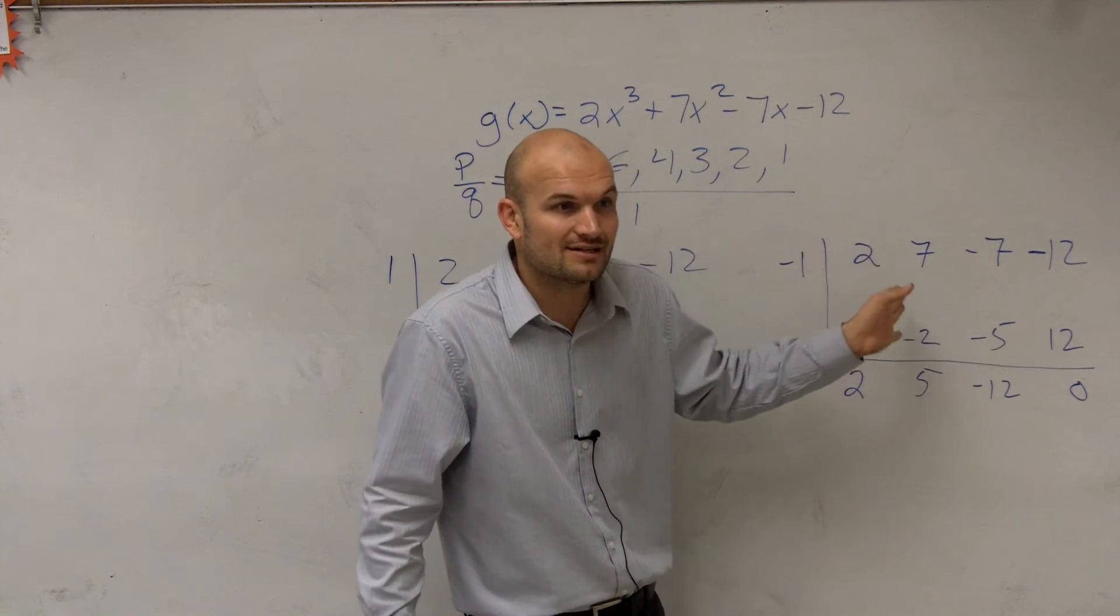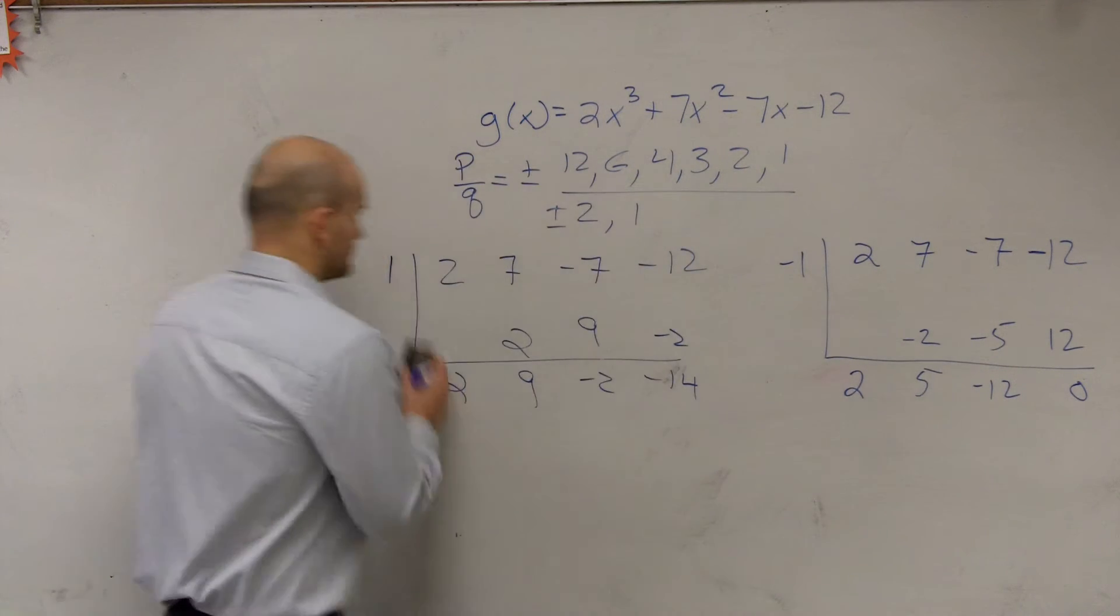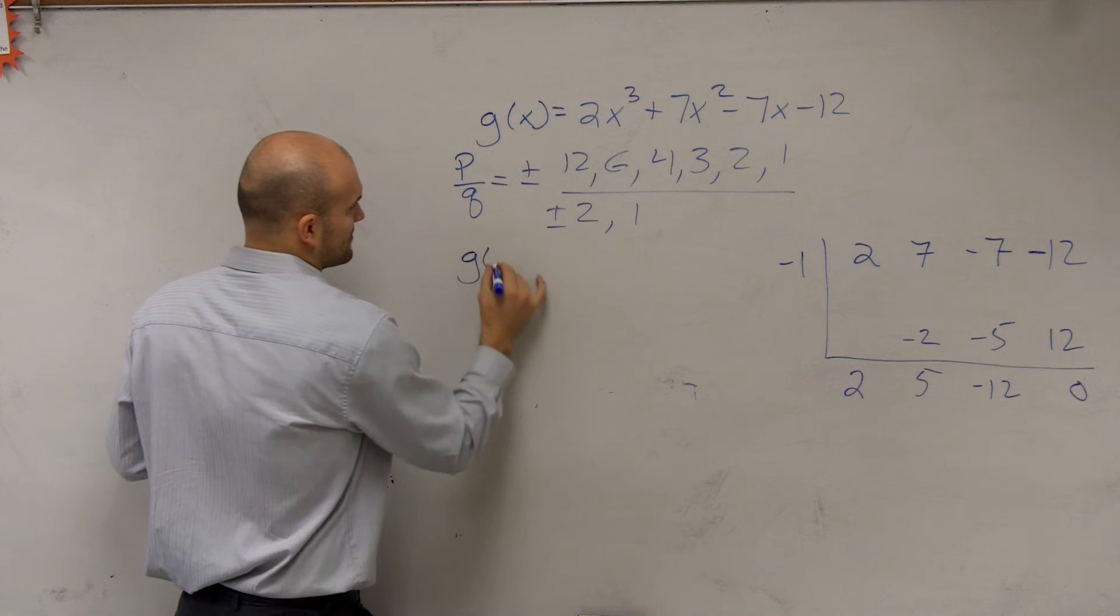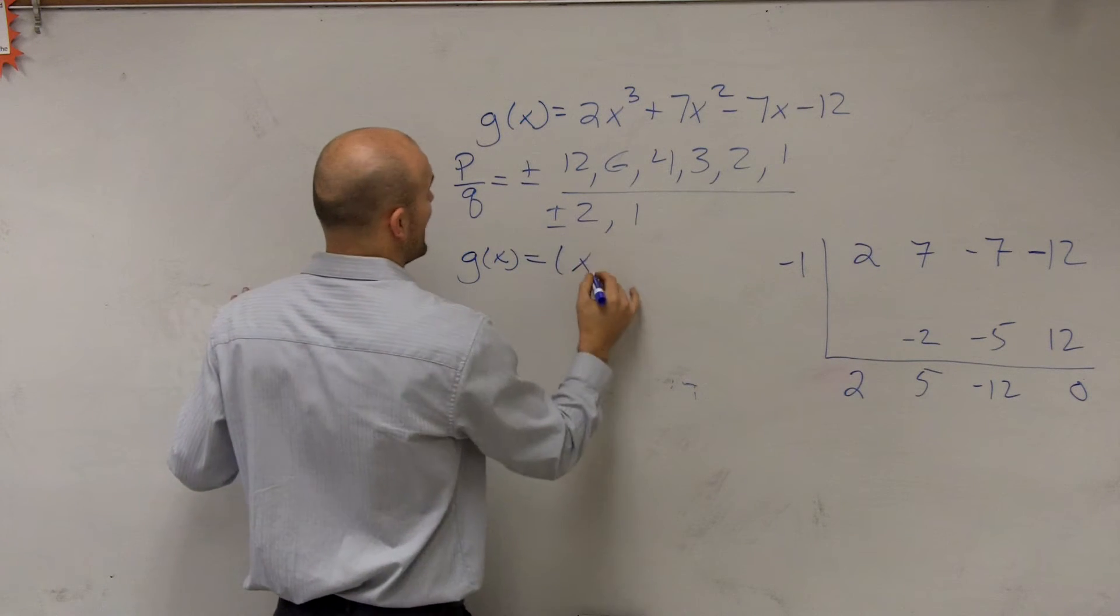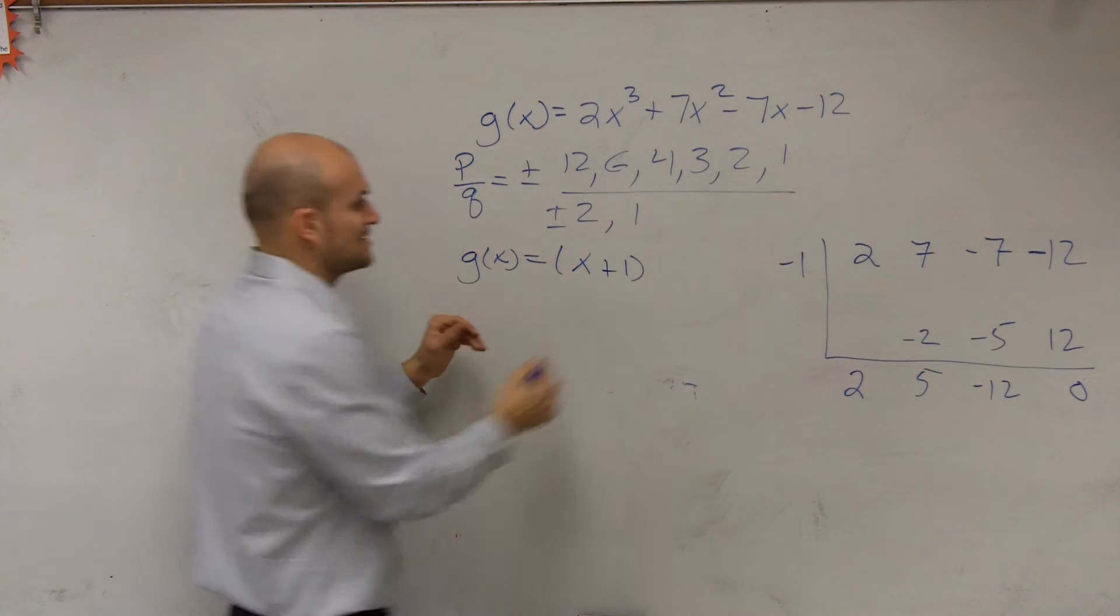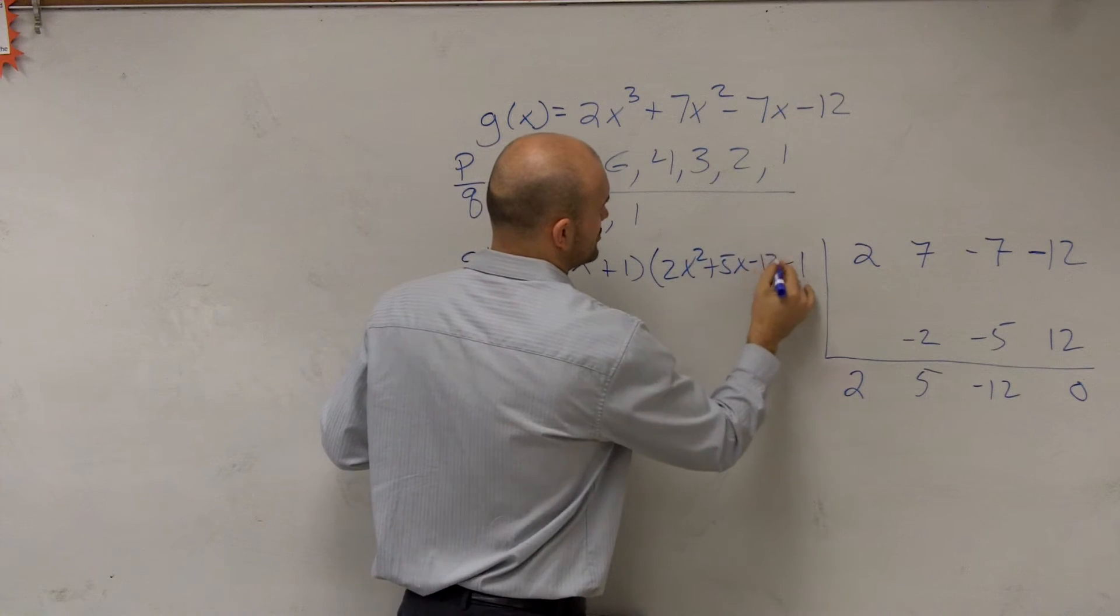Negative 1 is a zero. So now, you could say this. You could say g of x equals x plus 1, since x minus 1 is a zero, that means x plus 1 is a factor, times 2x squared plus 5x minus 12.